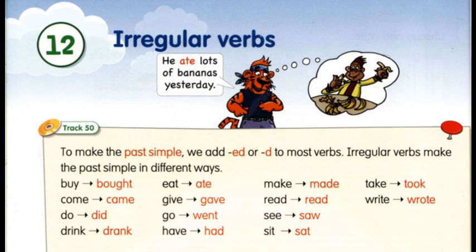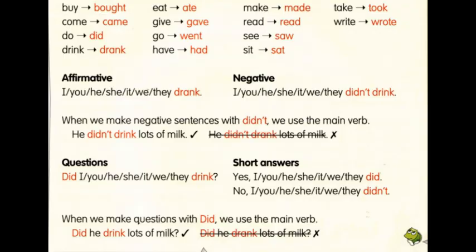Ваше домашнє завдання: обов'язково виписати ці слова у зошит парами та вивчити, як вони читаються та перекладаються у теперішньому та минулому часі. А зараз розгляньмо, як утворюється стверджувальна, заперечна, запитальна форма та короткі відповіді у irregular verbs – у неправильних дієслів.